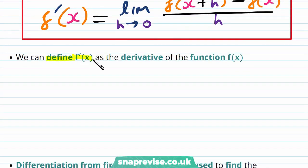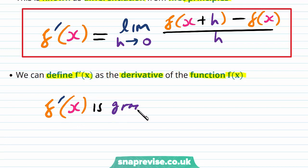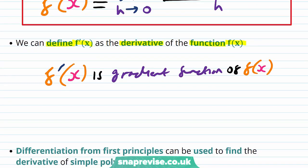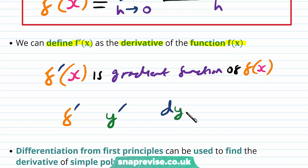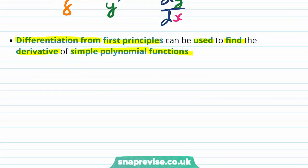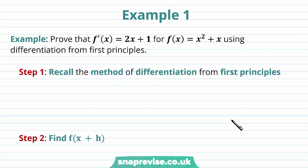We can define f'(x) as the derivative of the function f(x). We've seen that f'(x) is the gradient function of f(x), and in the context of differentiation we also call the gradient function the derivative. We can also write f'(x) as f' on its own, or as y', or as dy/dx. Differentiation from first principles can be used to find the derivative of simple polynomial functions such as x² + 2x - 5, x³, or x - 3x².